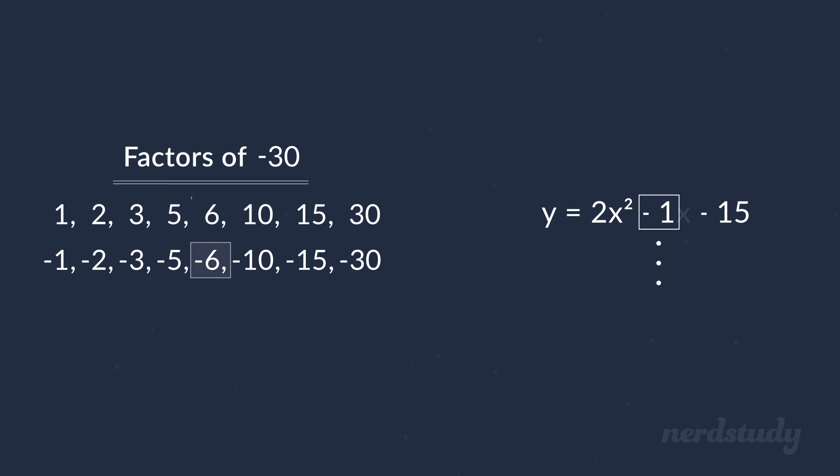For example, negative 6 and 5 would be negative 1. And obviously, multiplying the 2 would give us negative 30. And so this pair of numbers seems to be exactly what we were looking for. So great!